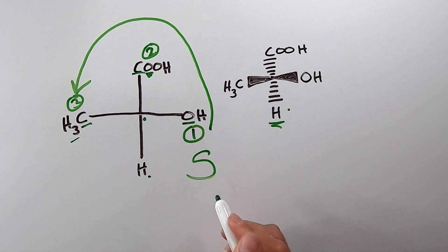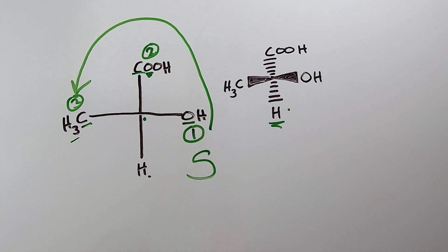With our lowest priority going into the page on a dash in the vertical position, we simply rotate from one to two to three, which is counterclockwise — a left rotation — meaning this chiral carbon is S configuration. That's all it is.